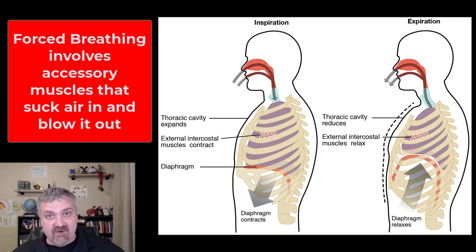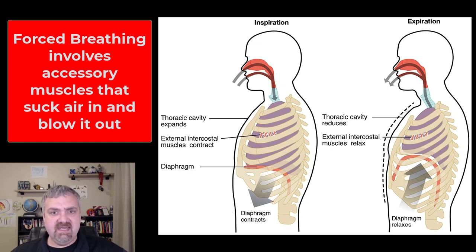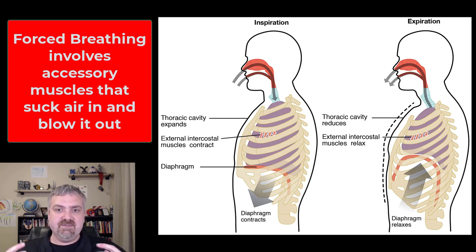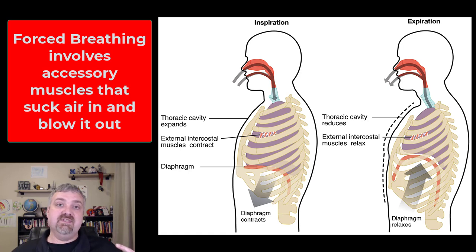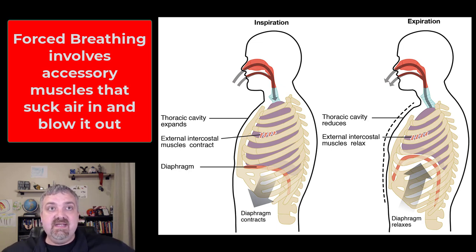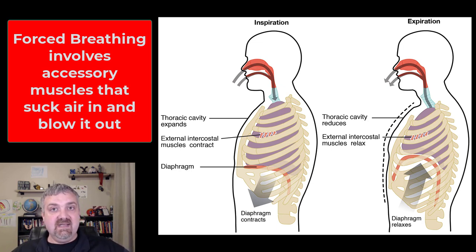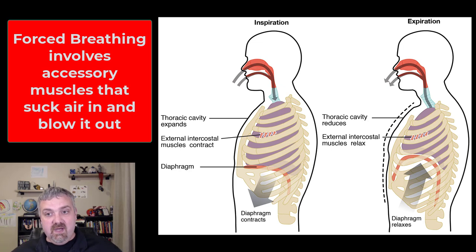Forced breathing is when you're literally sucking air in and blowing air out, like when you're exercising or playing a sport. This involves a lot more muscle activity. Forced inhalation still involves the diaphragm and the external intercostals, but it also involves muscles that raise the ribs — like your neck muscles, the scalene muscles, and your trapezius muscles. These muscles help pull your rib cage open. Forced expiration involves your abdominal muscles, rectus abdominis, internal intercostal muscles, and oblique muscles.